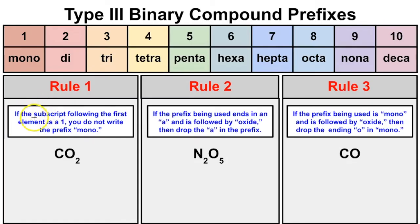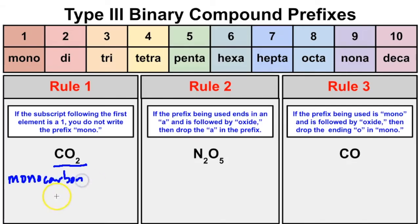Rule 1: If the subscript following the first element in a type 3 binary compound is 1, you do not write the prefix mono. For example, CO2 has an imaginary subscript of 1 on carbon. Normally you might say monocarbon dioxide, but since the 1 is on the very first element, we drop mono and simply say carbon dioxide.